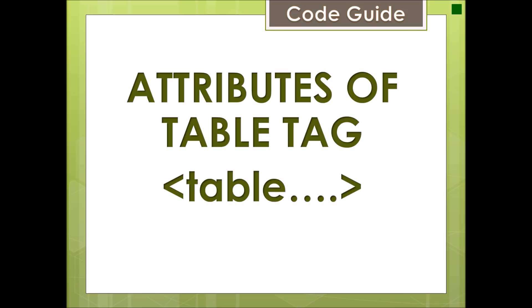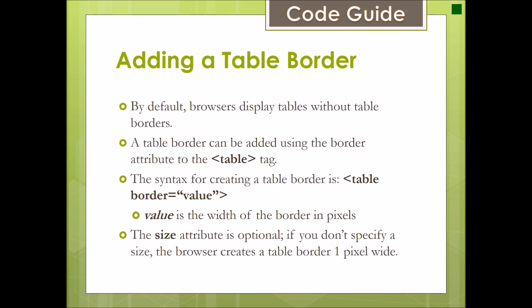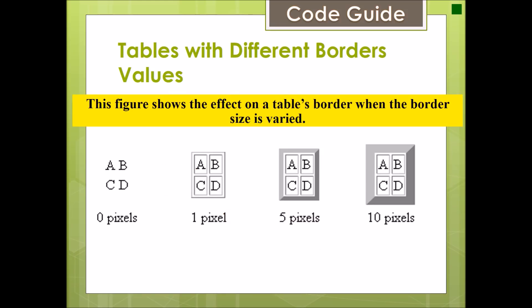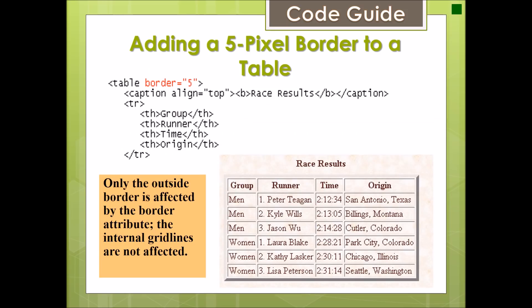Now we will discuss the attributes of the table tag. By default, a browser displays a table without borders. A table border can be added using the border attribute by giving a value — the width of the border in pixels. The border size attribute is optional; if you don't specify it, the browser creates a table border of one pixel. This table shows different border values: 0 pixel (no border), 1 pixel, 5 pixel, and 10 pixel. Adding a 5-pixel border is specified as border equal to 5.